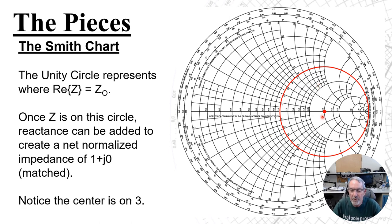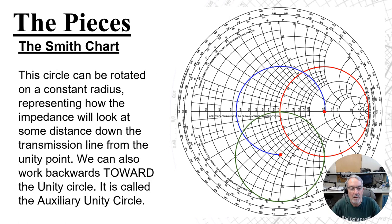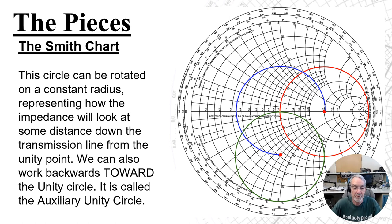I also want you to notice that the center of this circle is on the 3J0 point, just for your reference. Now this matching circle can be rotated on a constant radius — that constant gamma thing we talked about — representing how the impedance will look at some distance away from the matching point and down the transmission line.